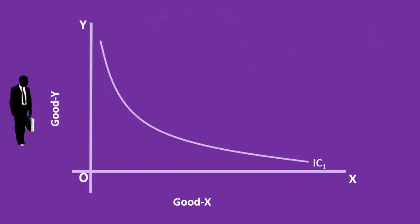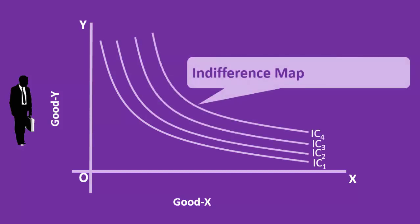This doesn't mean an individual has only one indifference curve. He has a number of indifference curves. A collection of indifference curves is called an indifference map.